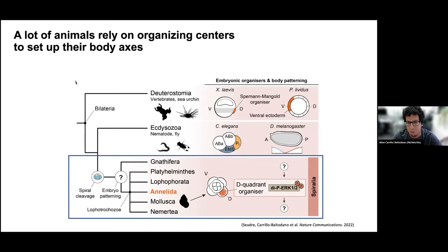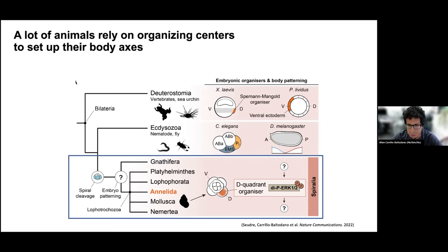What we know comes from a certain group — the snails within the mollusks — where a particular lineage we can call the D-quadrant lineage can act as an organizer to set up the different tissues of the embryo. And this organizer needs to be turned on by way of the MAP kinase pathway, in particular the effector, the dephosphorylated ERK.